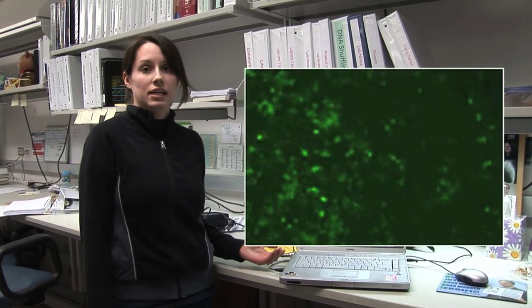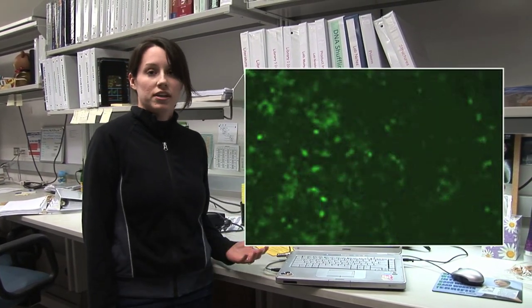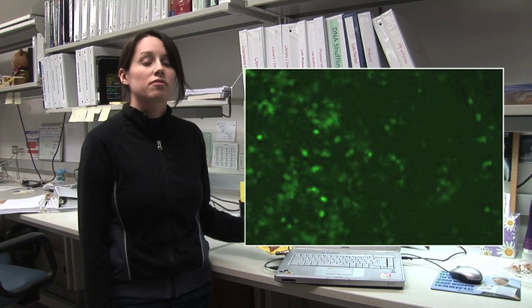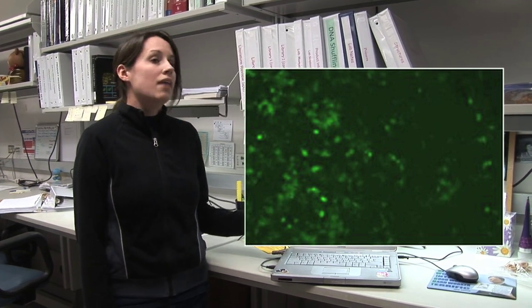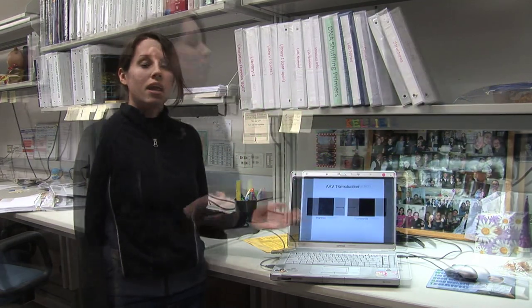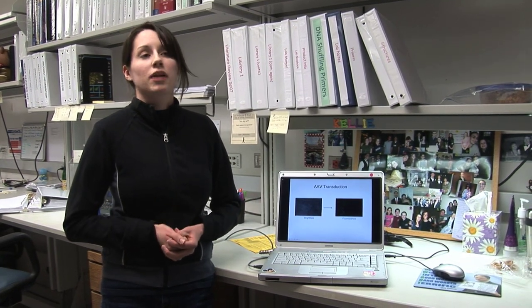After we purify our virus, we can add it to cells and actually see virus infection. In this example, we've taken mammalian cells and added our virus — in this case it encodes for GFP, or green fluorescent protein, which was first discovered in jellyfish. Our virus delivers this gene to the nucleus, and the cells produce this fluorescent protein, which we can image under ultraviolet light. This is just one small example of delivering a marker gene, but eventually our lab would like to modify our virus so it can target specific cells within the body and deliver therapeutic genes to help cure diseases.